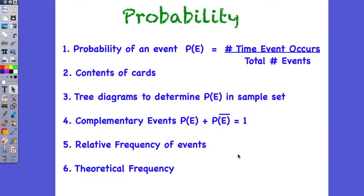In this clip, we're going to look at the things we've covered in probability. The first one we talked about was the probability of an event occurring, which is the number of times an event occurs divided by the total number of events. We're going to look at the contents of the pack of cards, because some people are still a bit confused about that one. Then we're going to have a look at tree diagrams to determine the probability of an event and the sample set — all the possible events, for example tossing a coin three times. We're then going to look at a complementary event, such as rolling a six or not rolling a six, where the two probabilities add up to one. And finally, relative frequencies of events and theoretical frequencies.